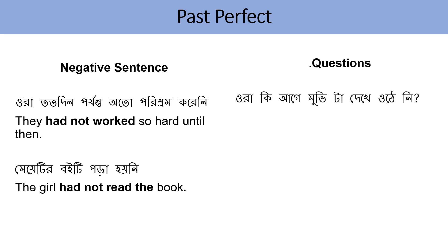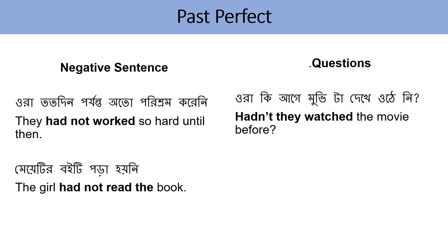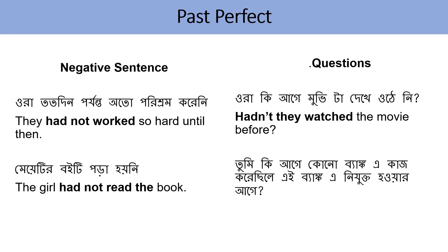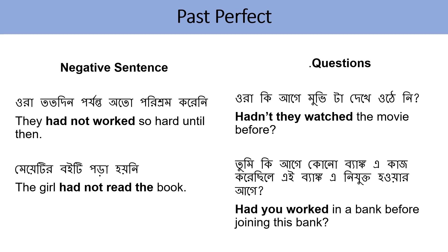How to form questions in Past Perfect? ওরা কি আগে মুভিটা দেখেনি? — Hadn't they watched the movie before? 'Hadn't' is the contracted form of 'had not'. Since it's a question, 'had' comes first, then 'not' (because negative), then subject. তুমি কি এই ব্যাংকে যোগ দেওয়ার আগে কোনো ব্যাংকে কাজ করেছিলে? — Had you worked in a bank before joining this bank? 'Had' comes first, then subject 'you', then past participle 'worked'.